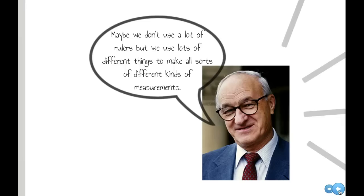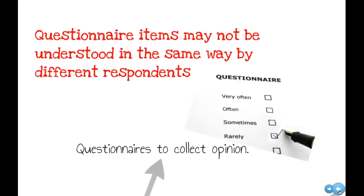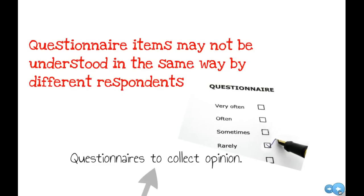Maybe we don't use lots of rulers, but there are lots of different things we use to do all sorts of different kinds of measurements. If we're looking at questionnaires, our participants may not understand all of our items in exactly the same way. If I say how often do you see your neighbours, they might say rarely and mean twice a week, and somebody else might say rarely and mean once a month.